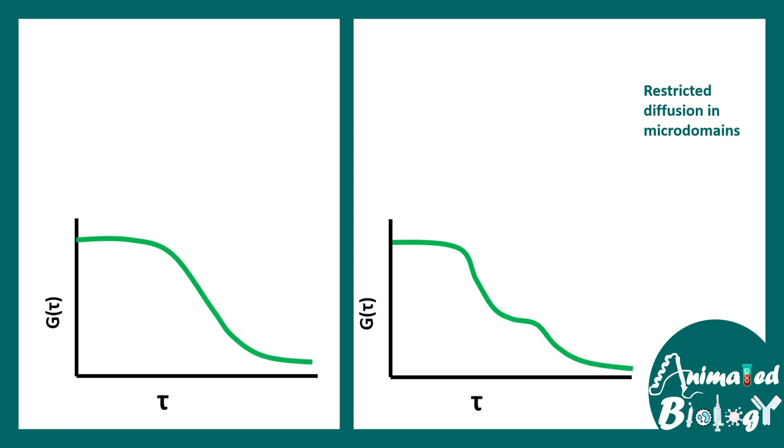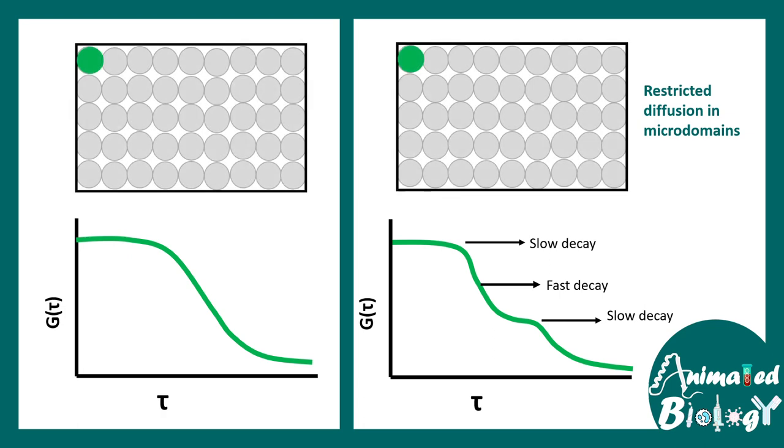Let's say we have two situations. In first situation, the graph looks like this and the second situation, the graph looks like this. The second situation tells you about a restricted diffusion model in a microdomain of a membrane. A trained biophysicist can quickly look at this data and tell you that there is a slow decay rate here in the curve and a fast decay rate here in the curve. So, it's a more complicated dynamics that has been captured using FCS.